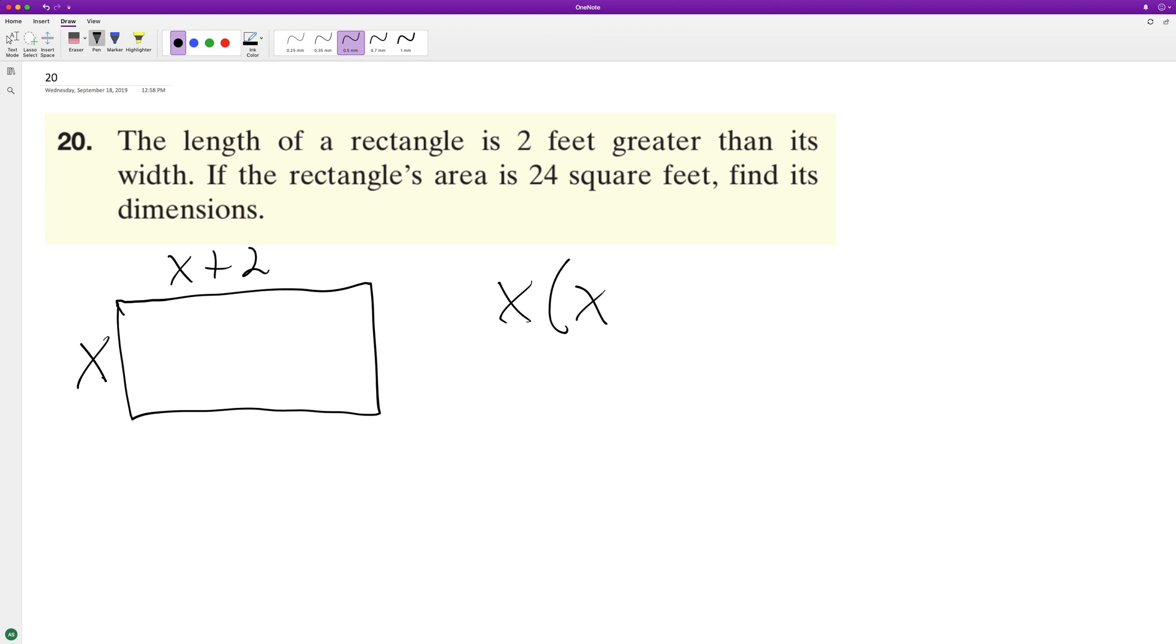So x times x plus 2, because area is equal to width times length, is going to equal 24. So we get x squared plus 2x equals 24.